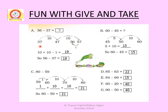Next: 56 minus 37. Start from 37 and forward count up to 56. From 37 to 47 in 10 steps, then 47 to 57 in 10 steps, and then back count 1 step to 56. So 10 plus 10 equals 20, minus 1 equals 19. Therefore 56 minus 37 equals 19.